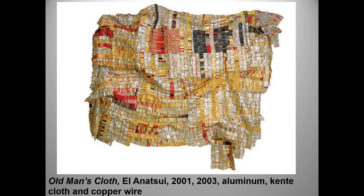Anatsui insists that his hangings be draped rather than hung flat, but he doesn't insist on draping them himself and is perfectly happy to have galleries or museums do so. He has preferences — horizontal ripples are better than vertical ones — but he doesn't regard any particular arrangement as final. Naturally, professional curators are disconcerted by this freedom. 'Museum people are trained not to be creative,' Anatsui complains. 'I find that very frustrating.'